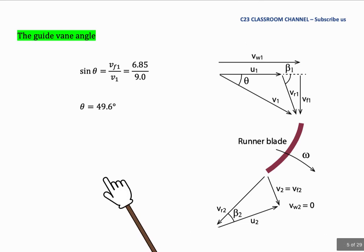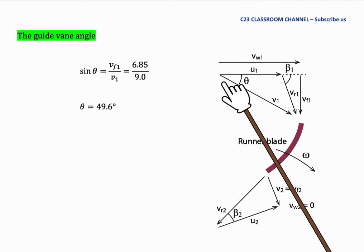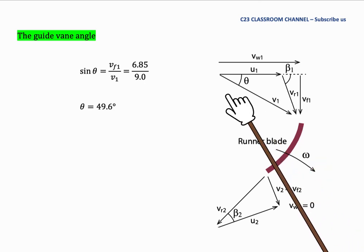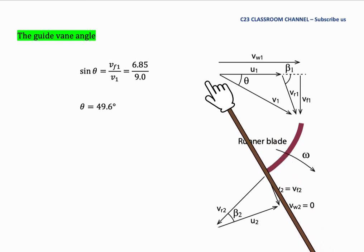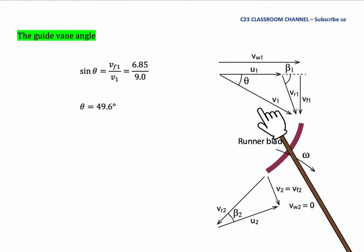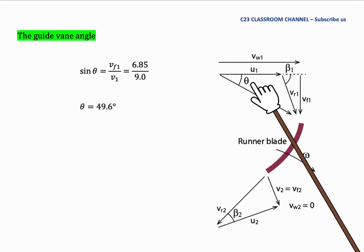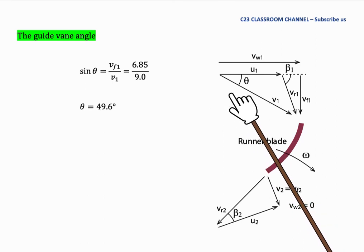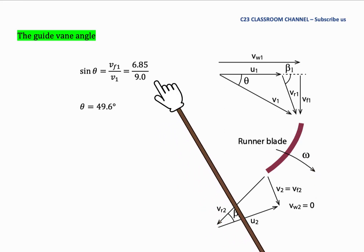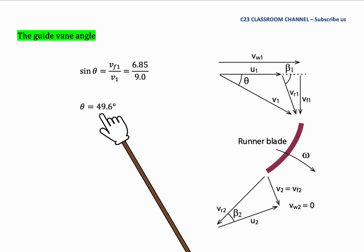Next, we need to calculate the guide vane angle. The guide vane angle is the angle at this position because the angle of absolute velocity V1 here is actually parallel with the guide vane. Because the guide vane was located here. This guide vane is to make sure that the absolute velocity will flow at a certain angle. So it means that the angle of V1 here is the angle of the guide vane. From this velocity triangle, we could say that sin θ here is equal to VF1 divided by V1. So we substitute the value here, we could get the angle θ here is equal to 49.6 degrees.